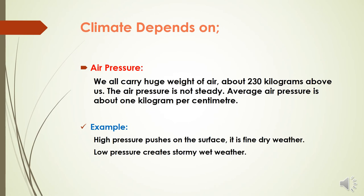We all carry a huge weight of air above us, but we don't feel it. This weight is in the form of a huge column of air above us, about 230 kilograms above each of us. This air pressure is not steady. Average air pressure is about 1 kilogram per centimeter. High pressure pushes down on the surface of the Earth and produces fine, dry weather, but low air pressure usually creates stormy, wet weather.